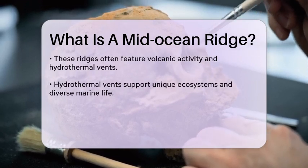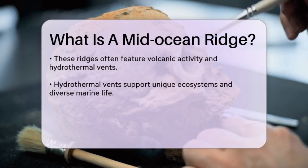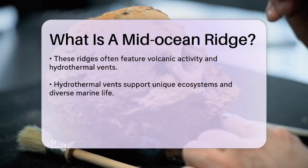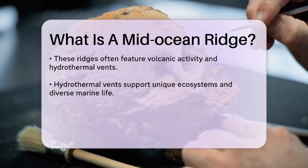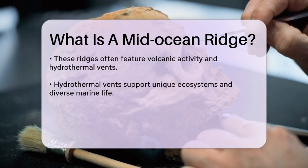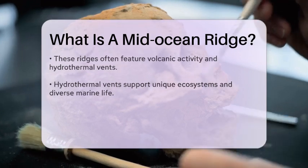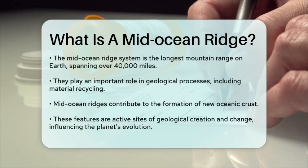The mid-ocean ridge system is the longest mountain range on Earth, stretching over 40,000 miles. It plays a vital role in the geological processes that shape our planet, including the recycling of materials and the formation of new oceanic crust.